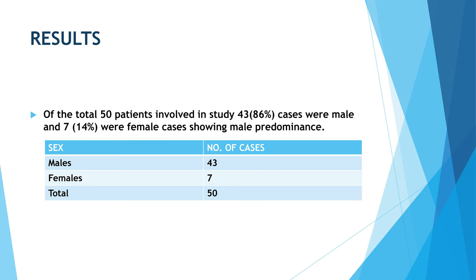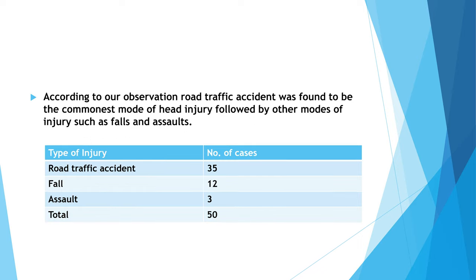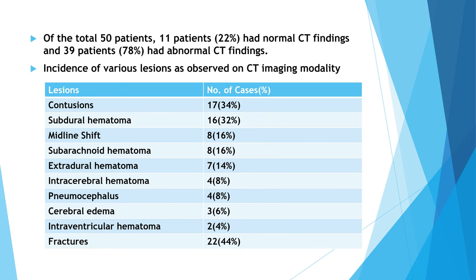Results. Out of the total 50 patients involved in the study, 43 cases were male and 7 were female, showing male predominance. Road traffic accident was found to be the commonest mode of head injury, followed by other modes such as falls and assaults. Of the total 50 patients, 11 patients had normal CT findings and 39 patients had abnormal CT findings.